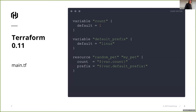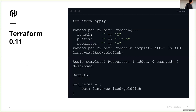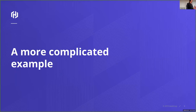So this is a typical example - a very simple one. I've got a single resource, I'm using the meta parameter count, and I've got some interpolation which is going to set a prefix. Nothing clever going on there. If I run it and apply it, it's as expected - I'm just outputting my pet name. But the key thing is that Terraform configuration doesn't always look like that. It would be wonderful if it was always that simple, but it's not.